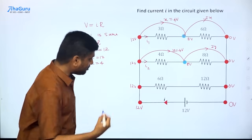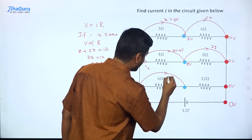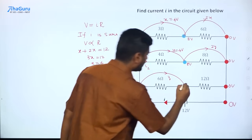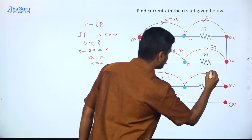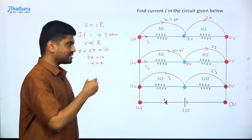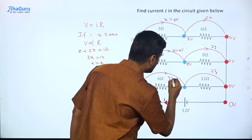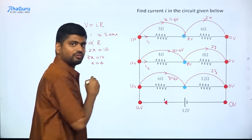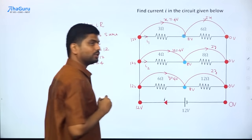The same thing can be repeated for the third branch. Let's assume the potential drop is z. Since 12 is 2 times 6, the potential drop across the other resistor has to be 2z. We know that z plus 2z, which is 3z, equals 12, so z is also equal to 4 volts. If this point has a potential of 12 volts, the midpoint has a potential of 8 volts.